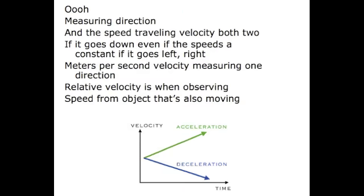Measuring direction and the speed. Travel velocity, both two. If it goes down, even if the speed's constant. If it goes left, right, meters per second. It can change velocity, measured in one direction. Relative velocity is when the direction speed from object, that's awesome.